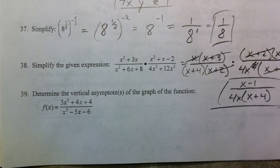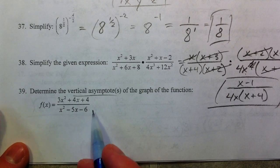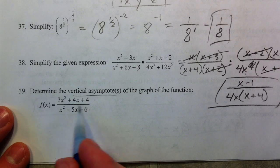All right, number 39. Your vertical asymptotes are just like your domain and coming from the denominator.